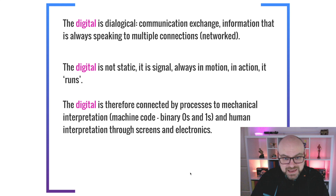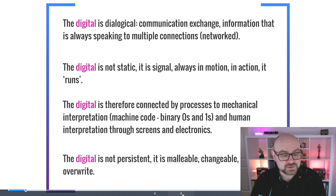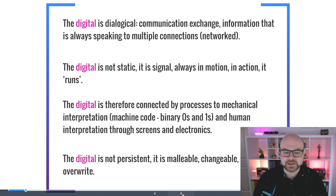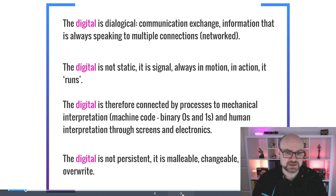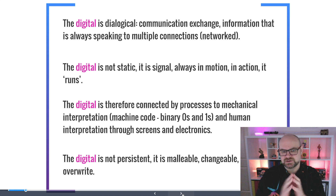The digital converts binary code into human-readable content via visuals or text. So the digital is a process — it is in motion, not static, and always being interpreted by machines for human interpretation. There are multiple levels of interpretation always implicated in the digital. We also know that the digital is not persistent — it is malleable, changeable, and easy to overwrite. However, on mass, actually deleting individual bits of information within a digital network or library is quite difficult, so the notion of persistence is complex.